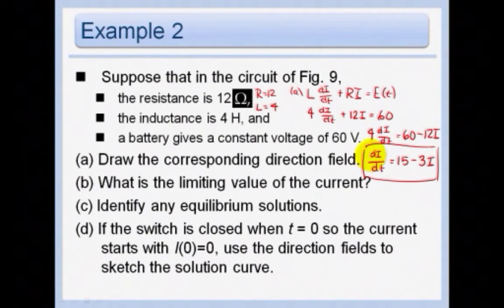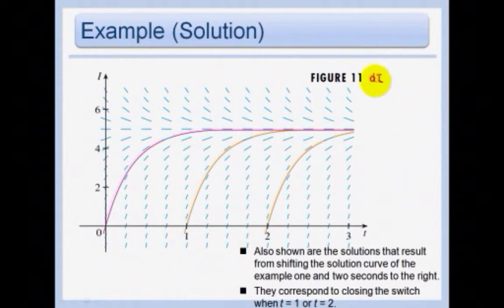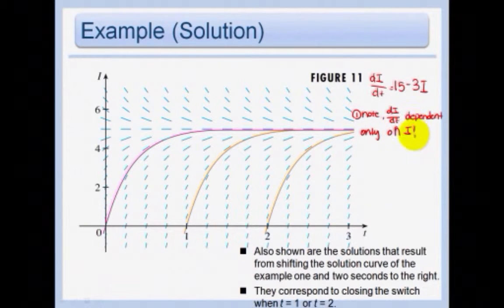Now notice in this one that DI DT only is dependent on I. It's not dependent on T. And so that's going to make our drawing so much easier. So remember we had DI DT equals 15 minus 3i. So the first thing that we noted was DI DT dependent only on I.